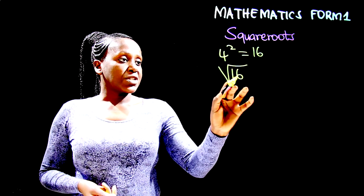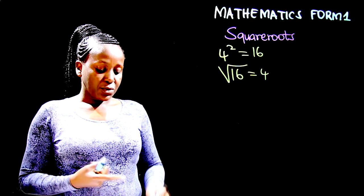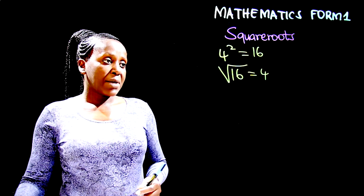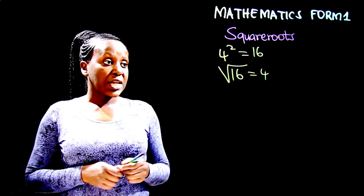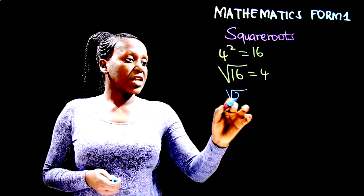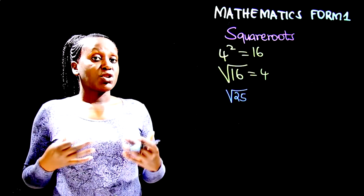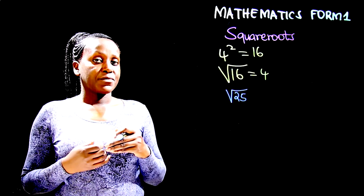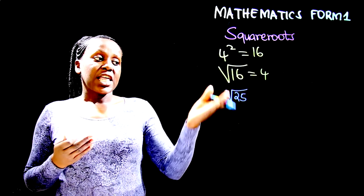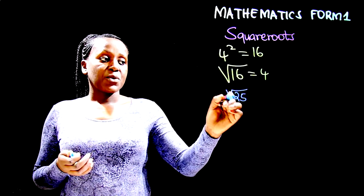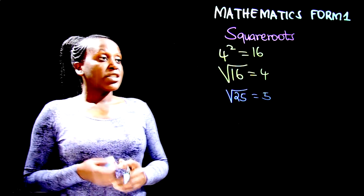So if you want the square root of 16, it will be equal to 4. Anytime you are getting the square root, you have to ask yourself: which number can you multiply by itself to give you that number? For instance, if you want the square root of 25, ask yourself which number multiplied by itself gives 25. The answer is 5 — if you multiply 5 by itself you get 25, so the square root of 25 is 5.